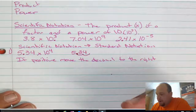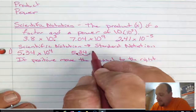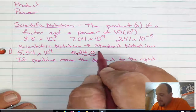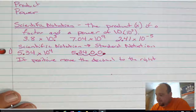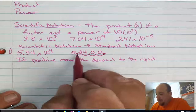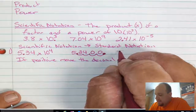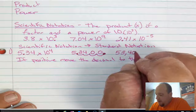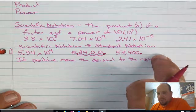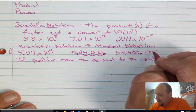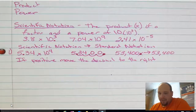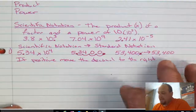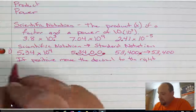I have to insert zeros so I can move the decimal a third time, then insert another zero to move it a fourth time. Now my decimal is right behind that last zero. So I rewrite this number as 53,400. The decimal is there, but because there are no digits behind it, I just write 53,400. So 53,400 is the way I would write that in standard notation.